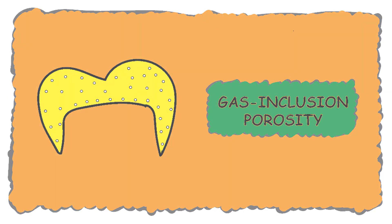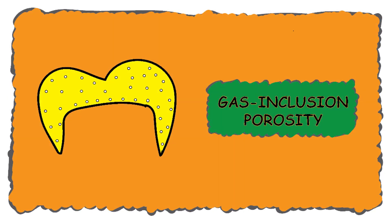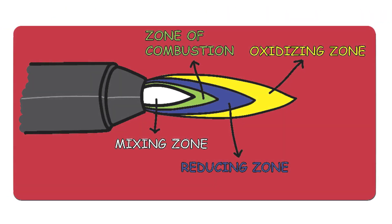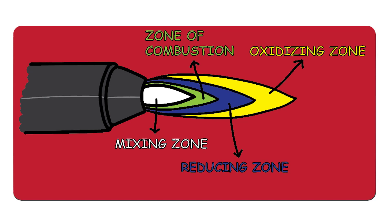The next porosity is gas inclusion porosity. Gas inclusion porosity and pinpoint porosity are both caused by the same reason: incorporation of environmental gases into the molten metal. The recommended procedure is to melt alloys in the reducing zone of the flame. But if the oxidizing zone is used instead, atmospheric gases like oxygen and hydrogen tend to get incorporated into the molten metal, which may produce gas inclusion or pinpoint porosity.